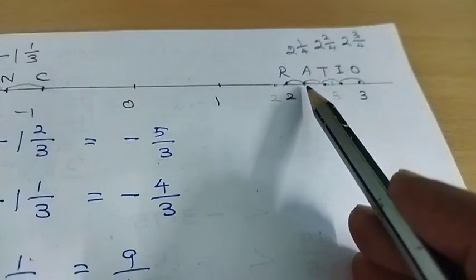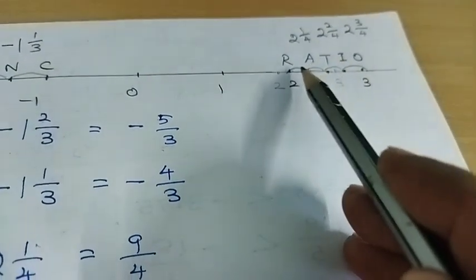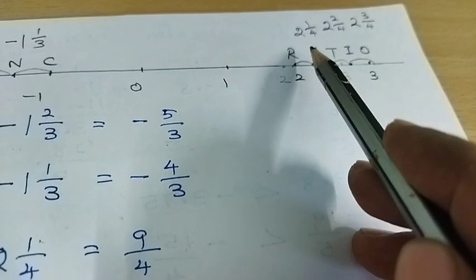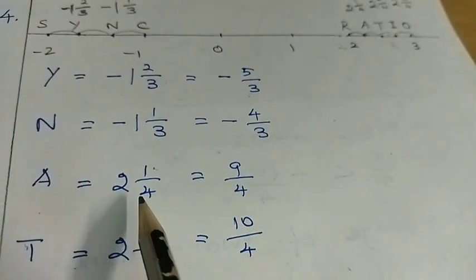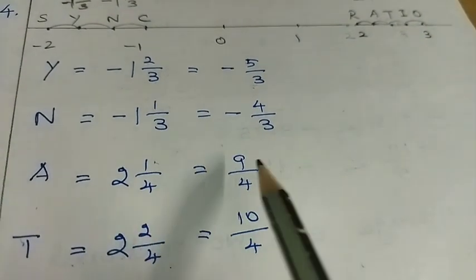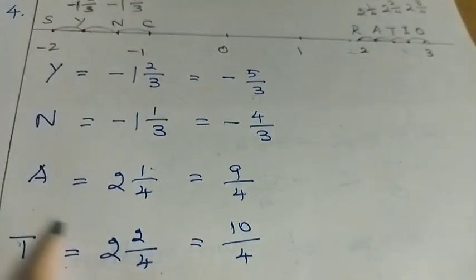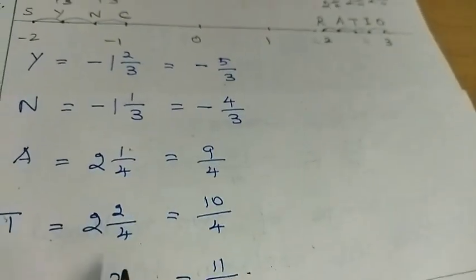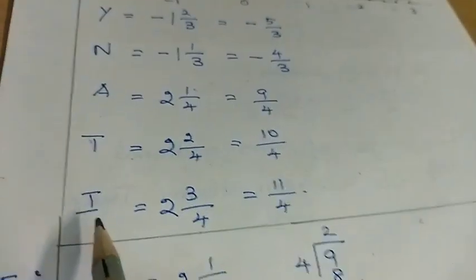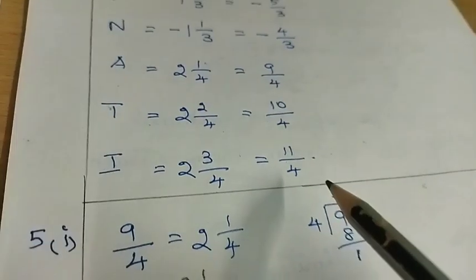Here A is at 2 and 1 by 4 — as improper fraction: 2 fours are 8 plus 1 = 9 by 4. T is at 2 and 2 by 4 — 8 plus 2 = 10 by 4. Next I is at 2 and 3 by 4 — 8 plus 3 = 11 by 4.